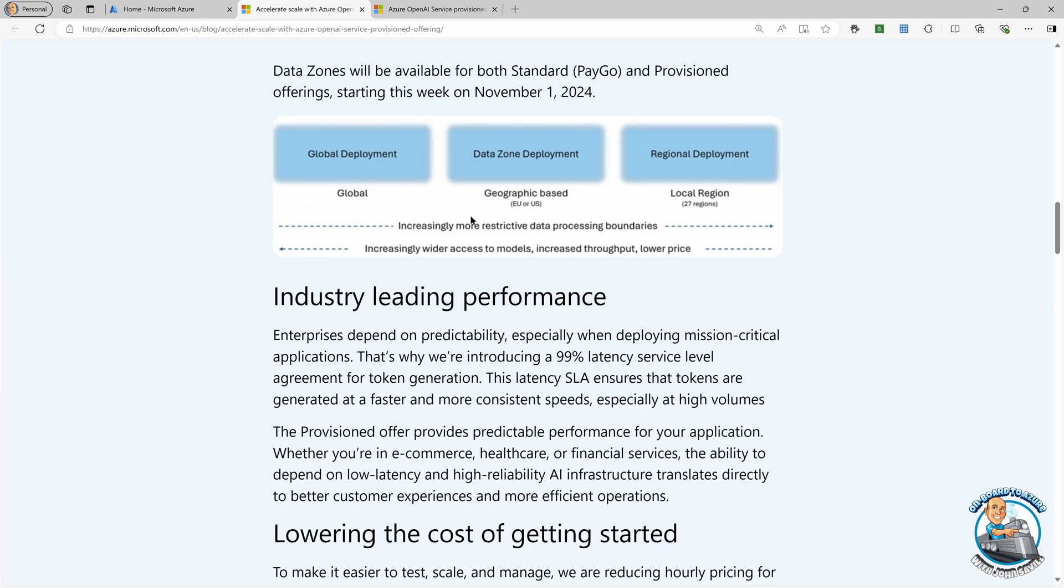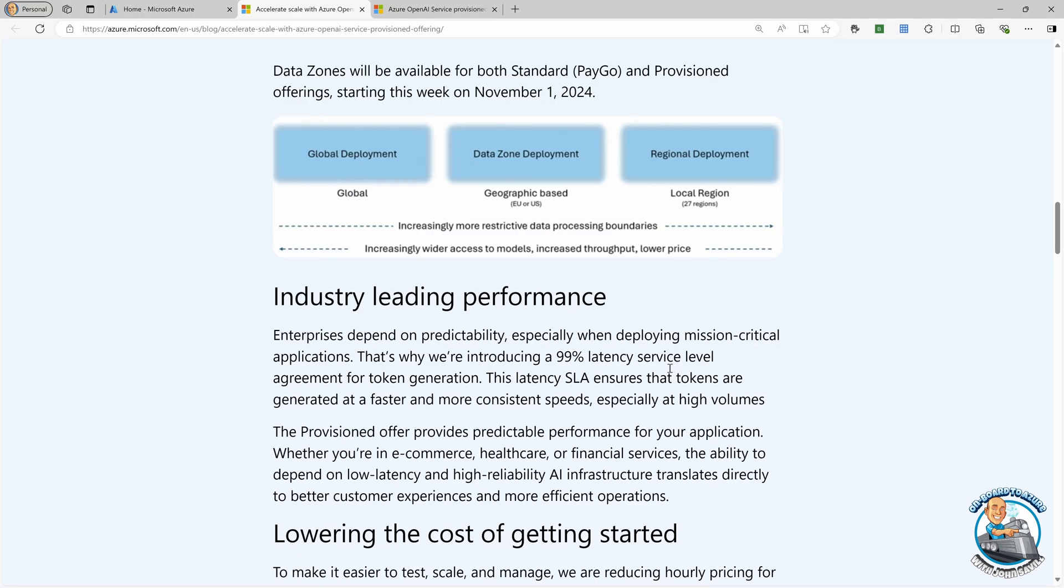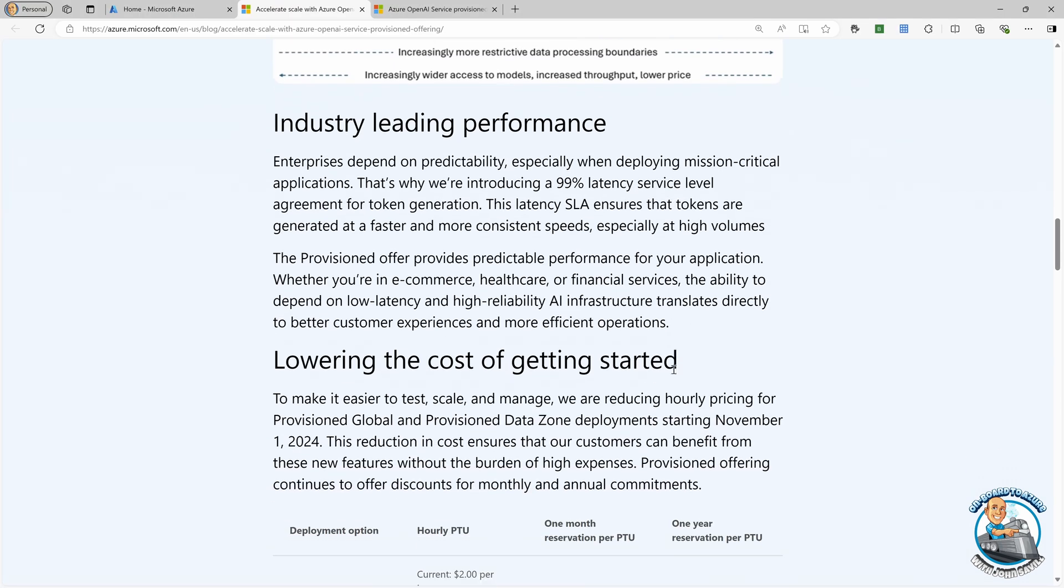They also talked about they're introducing a 99% latency service level as part of your token generations for your provisioned throughputs.